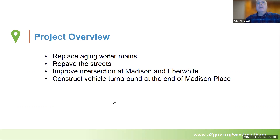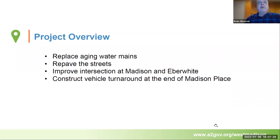Beyond that, we had the opportunity to make two other improvements. One is at the large five-point intersection of Madison, Eber White, Mount Pleasant, and Mount Vernon — to make some improvements at that intersection. The other item, which will come as a relief to many people on Madison Place who have vehicles turning around in their driveways, is to construct a T-turnaround at the south end in that empty lot. The lot was purchased by the city about a year ago using solid waste funds to provide a turnaround for trash trucks, snowplow trucks, UPS trucks, and anyone needing to turn around at the end of Madison Place.